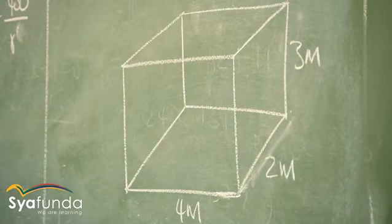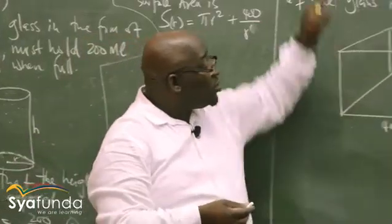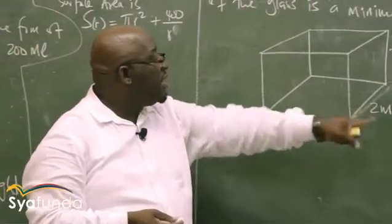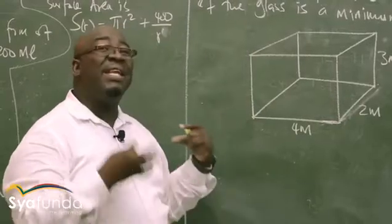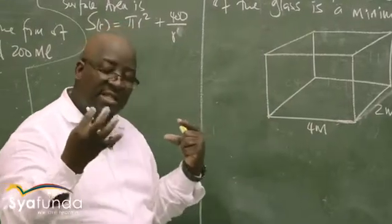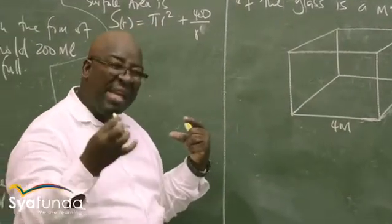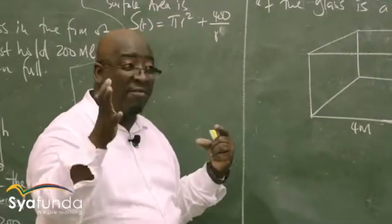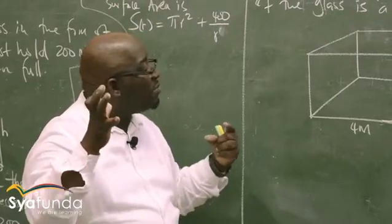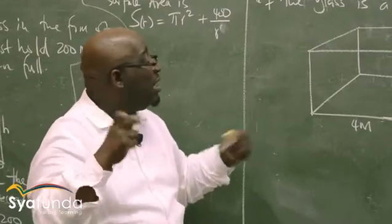This box has got a maximum of six surfaces. But if it says without a lid, the maximum surfaces are five. So that becomes important — that becomes key. You read the instruction carefully.